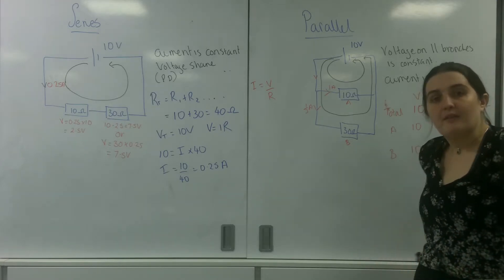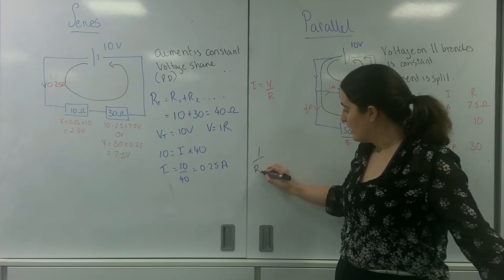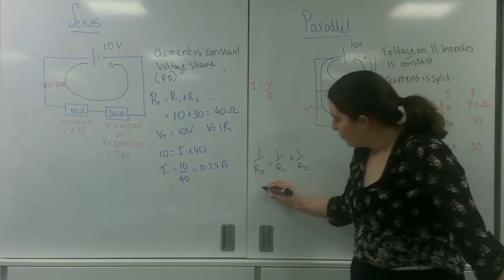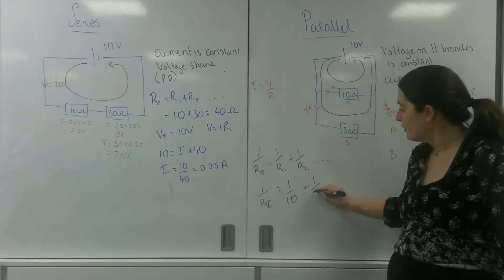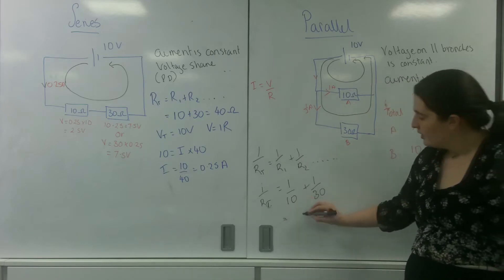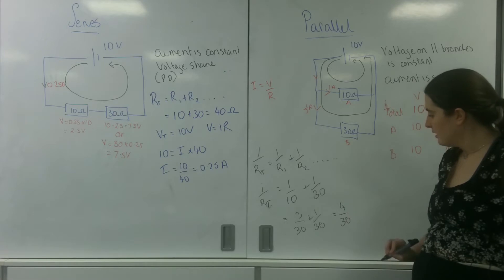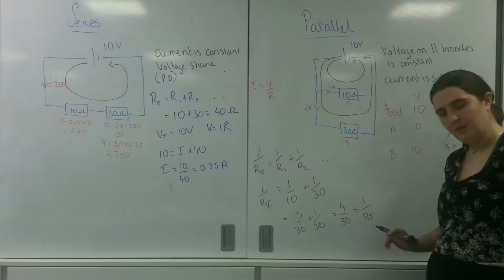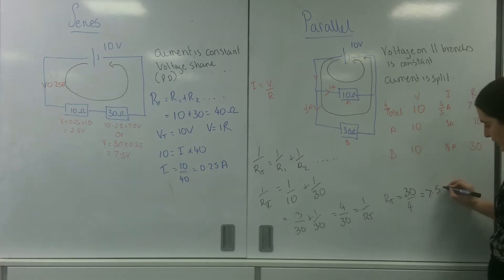Another way that you could have found this information out is using the resistors in parallel formula: 1 over RT is 1 over R1 plus 1 over R2, and so on. So 1 over RT is 1 over 10 plus 1 over 30 which equals 3 over 30 plus 1 over 30, that's 4 over 30. And that is 1 over RT. I then have to flip it so RT is 30 over 4 which is 7.5 ohms, exactly what I found up here.